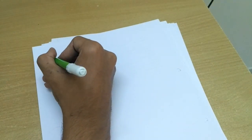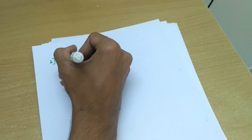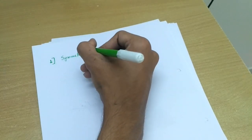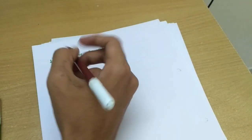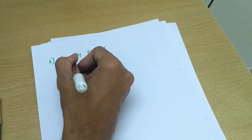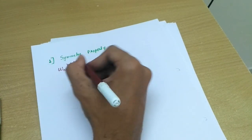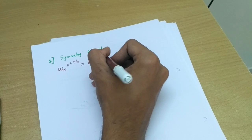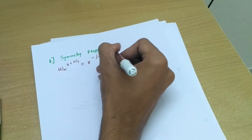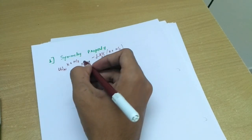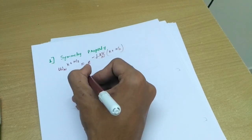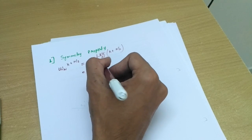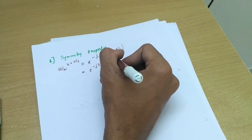So the first one is symmetry property. It says that W_N raised to k plus N by 2 equals e to the power 2πj/N into k plus N by 2. I am just giving you the proof, so we will just simplify this.